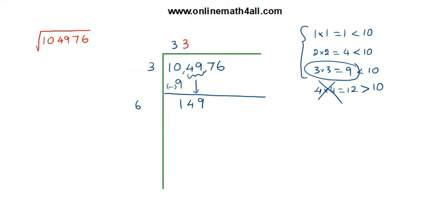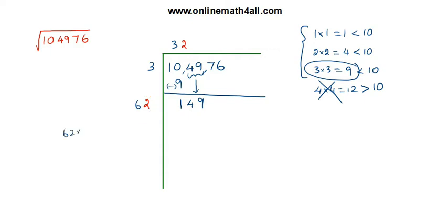So the next option is: if we go to four, we get an even larger number. So we consider two. If we take two here, we also take two in the divisor. After taking the same number in both places, we multiply sixty-two by two: two times two is four, two times six is twelve, giving one hundred and twenty-four. So we subtract one hundred and twenty-four from one hundred and forty-nine.